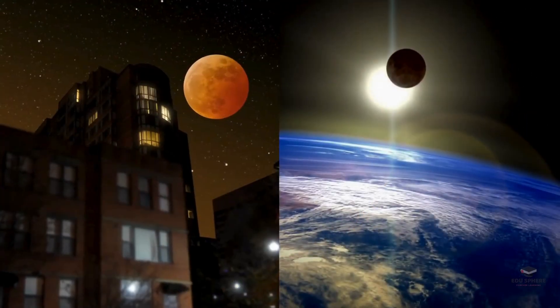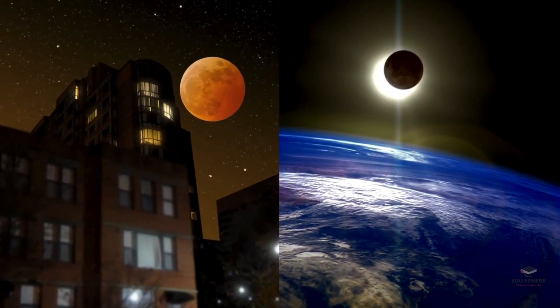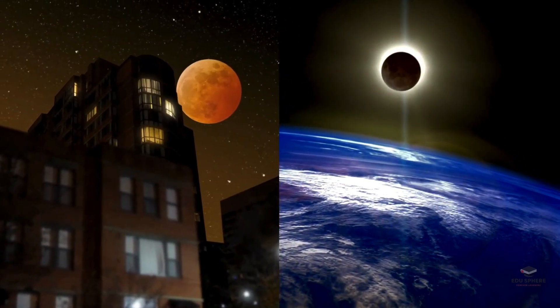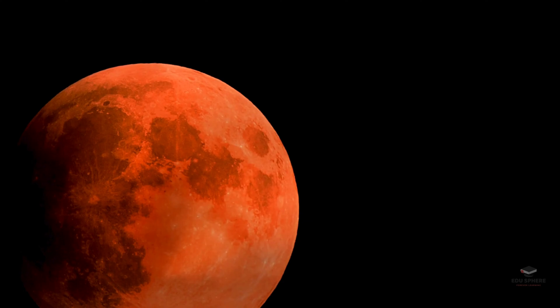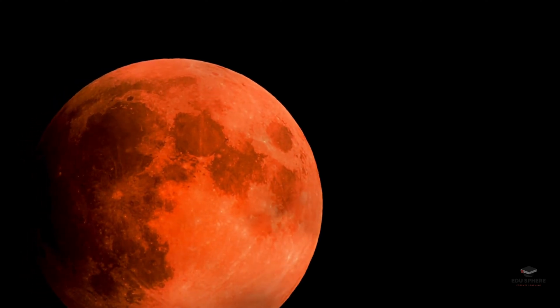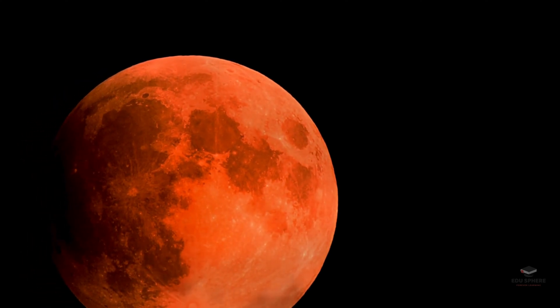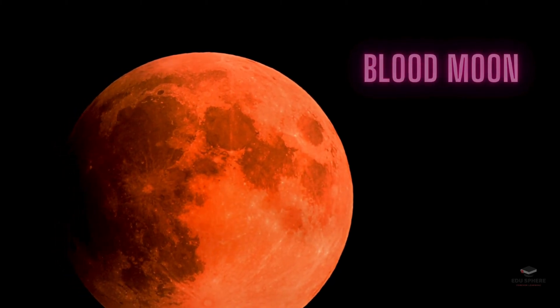A blood moon occurs during a total lunar eclipse when earth's shadow completely covers the moon. Although it holds no special astronomical significance, the sight is captivating as the moon transforms from its usual whitish hue to a striking red.